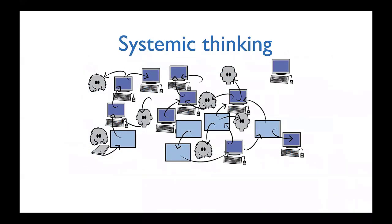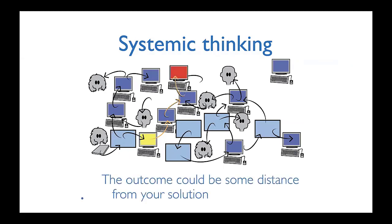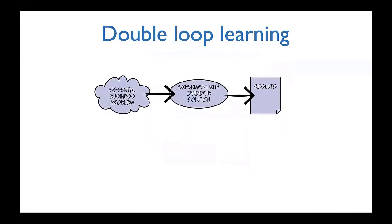Systemic thinking: if I plug in a new solution and it sends data to the next solution, which then breaks a third one, the idea of systemic thinking is not just about what happens next, but what happens after that and after that. When probing, we don't just want an output — we need an outcome. Double loop learning starts with the essential business problem and experiments with candidate solutions. We probe, look at results, and if something doesn't work, we try a different solution.